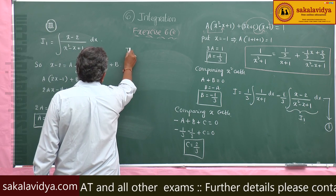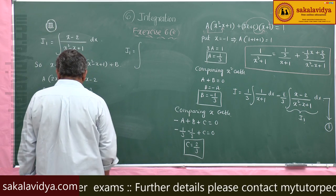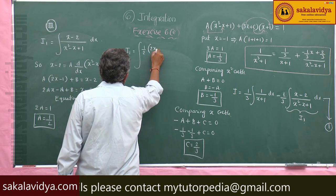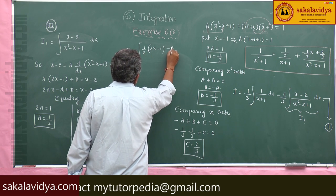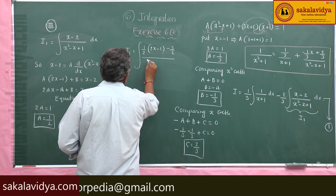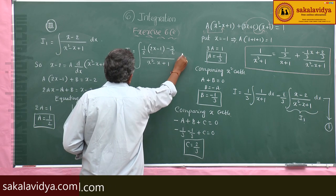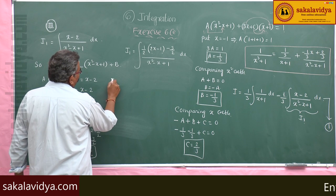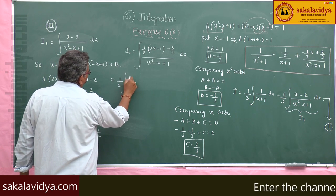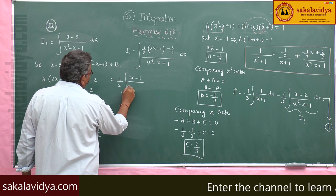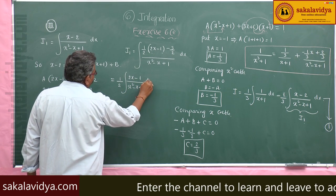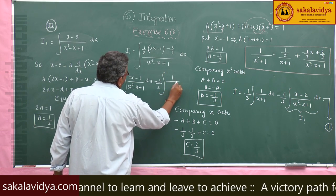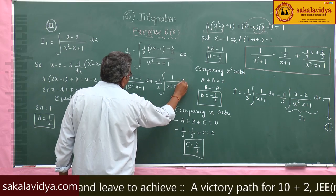So I₁ can be written as 1 by 2 integral 2x minus 1 by x square minus x plus 1 dx minus 3 by 2 integral 1 by x square minus x plus 1 dx.